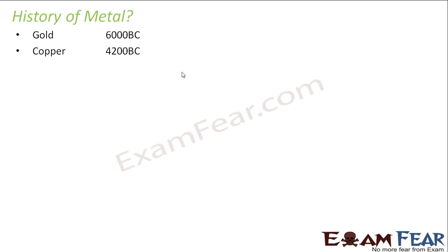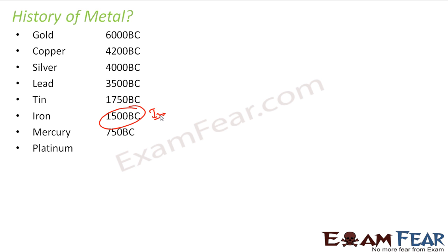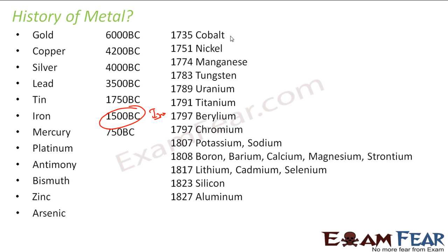After gold, they found copper — which looks similar to gold — and then silver, because these metals are generally inert and don't react much. Then they found lead, tin, and iron, which marked what we call the Iron Age. Then mercury was discovered. Metals like platinum, antimony, bismuth, zinc, and arsenic were all found in the BC era. Aluminium was found only as recently as 1827. These metals were discovered later because they are more reactive.